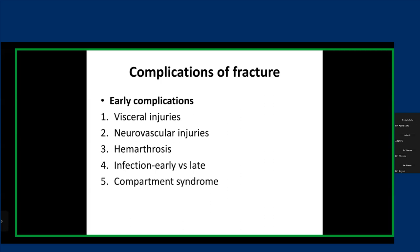The last part of my presentation is about complications of fracture. During the early phases, we look for associated injuries like visceral injuries, neurovascular injuries, any hemarthrosis or bleeding into the joint. Infection is also common, especially in open fractures — could be early or late. Compartment syndrome is the complication we fear the most and try to prevent the most — we don't want to miss that diagnosis because it will cost the patient their limb. We want to overdiagnose compartment syndrome: it's better to suspect it, do a fasciotomy, and be wrong than to miss it.